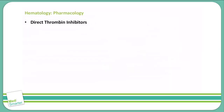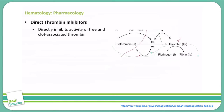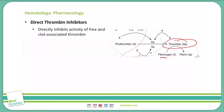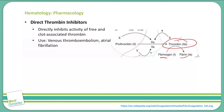Let's start by discussing our direct thrombin inhibitors. As we mentioned, this directly inhibits the activity of free and clot-associated thrombin, also known as 2a. When we inhibit thrombin, we inhibit the ability of fibrinogen to be cleaved into fibrin, further going down our clotting cascade. We use this for situations including venous thromboembolism as well as atrial fibrillation, which helps keep us from forming clots.